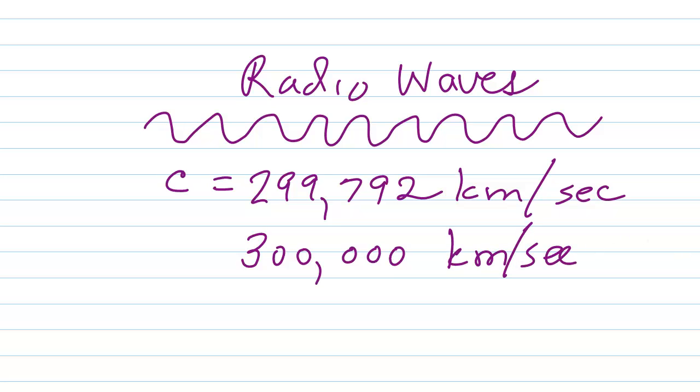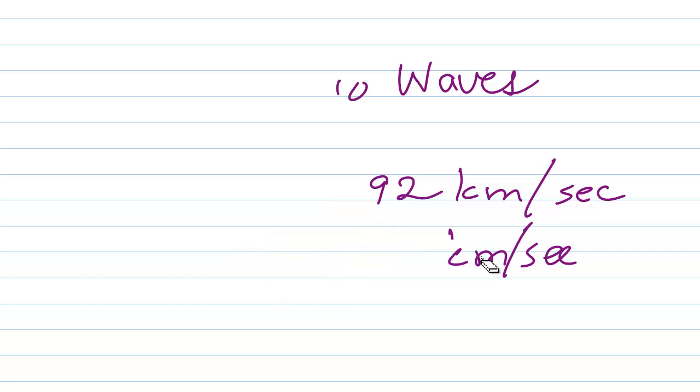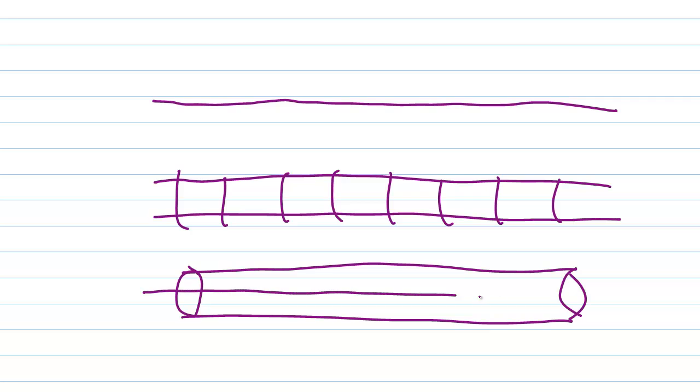Now, that's in free space. But when you have a transmission line, for example, ladder line, coaxial cable, even a single wire. If you have some kind of a medium other than free space, a wire, a ladder line, a coaxial cable line. The electromagnetic waves are not going to travel as fast down these media as they do in free space.